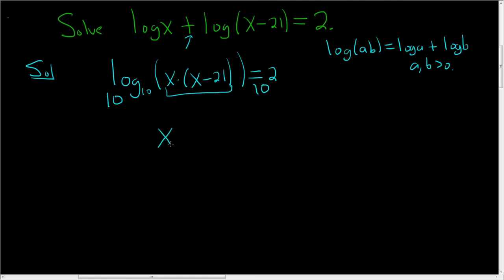So this is going to be x squared, multiplying, minus 21x. Again, multiplying. And this is equal to 100. Wow, huge numbers.